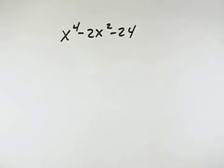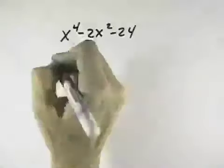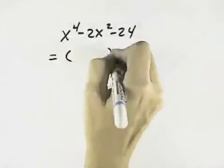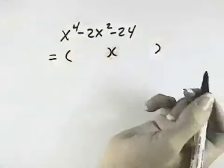We want to factor this completely, so we first look for the greatest common factor. There is none, so we count the terms. There's three of them, which means we break this trinomial into two factors.